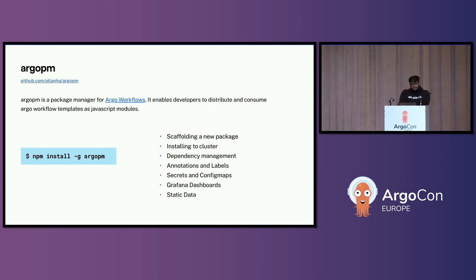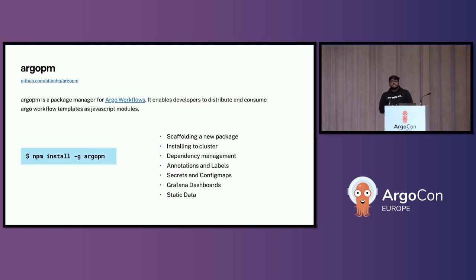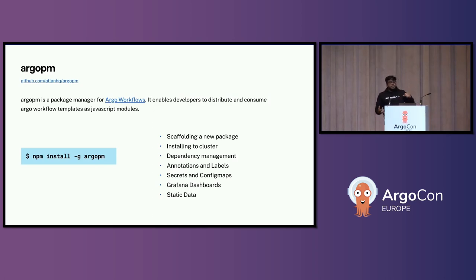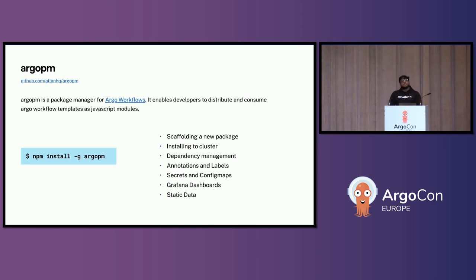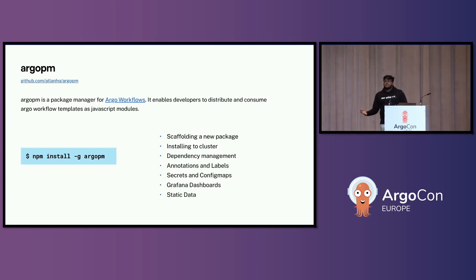That's how we built Argo PM. It's inspired by NPM — it's a package manager for Argo workflows. It enables developers to distribute and consume Argo workflows as JavaScript modules. It's public and open source; you can install it right now and start using it. It has a bunch of features very similar to NPM: scaffold a new package, install to cluster, dependency management, annotations and labels. You can also add standard Kubernetes resources like secrets and config maps. We've added support for Grafana dashboards, so your package includes both your workflow and observability components. We also added support for static data — sometimes you just need some artifacts present on your object store.